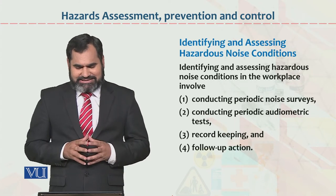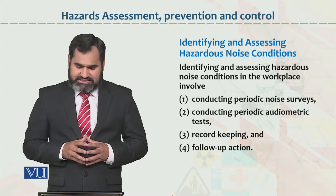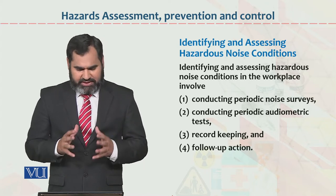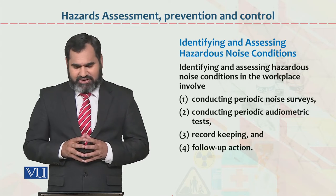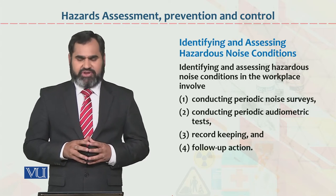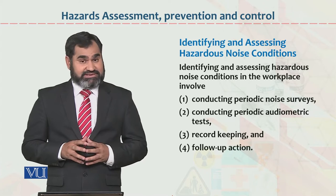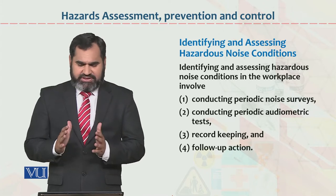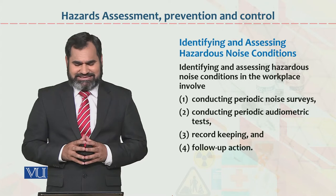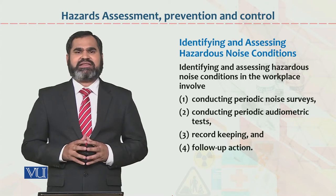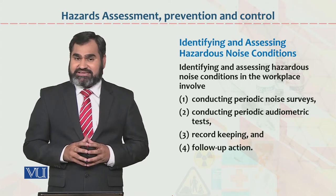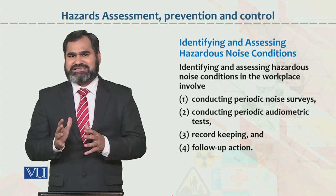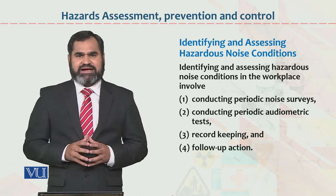Identifying and Assessing Hazardous Noise Conditions in the Workplace involves: Number 1 — Conducting Periodical Noise Survey; Number 2 — Conducting Periodic Audiological Test; Number 3 — Record Keeping and Follow-up Actions. These four things are basically a process through which we can assess organizational noise and workplace noise and its effects.